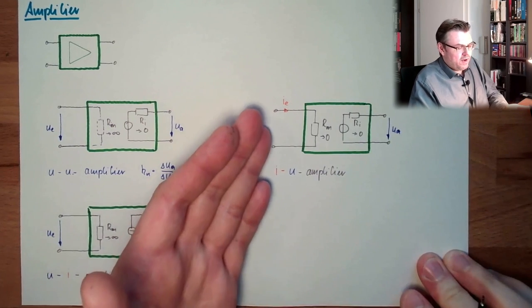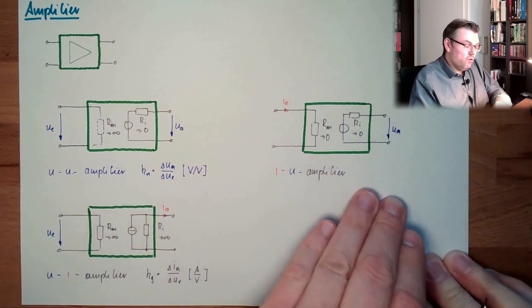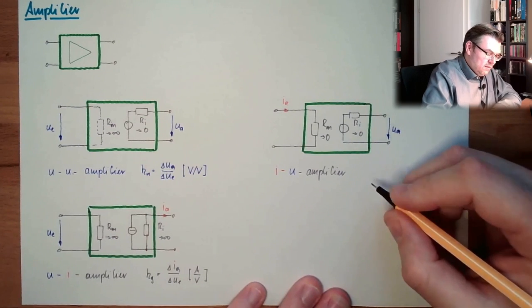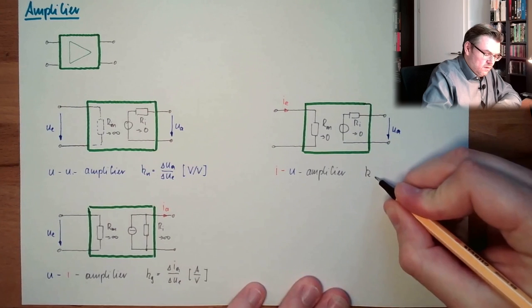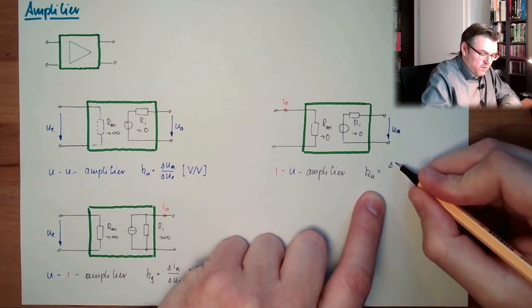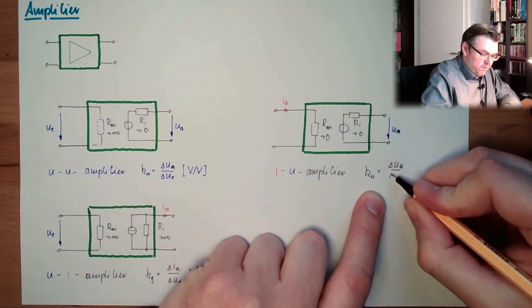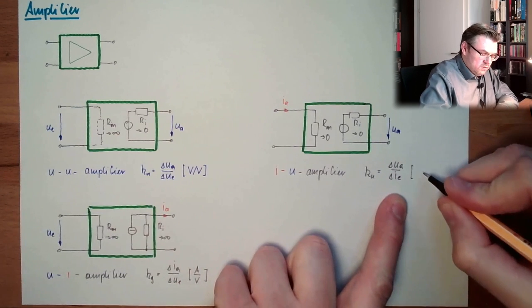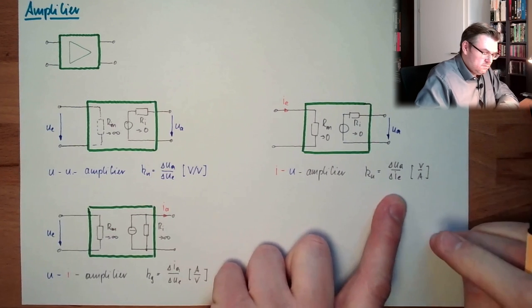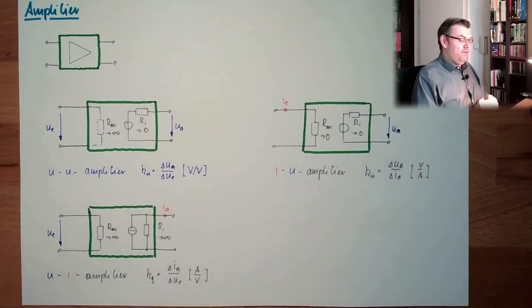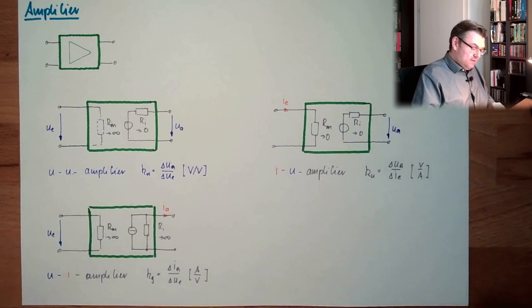I am converting a current signal to a voltage signal. And the gain factor is delta Ua divided by delta Ie. So, this is volts by amps. And now, it's really hard to guess, I think, the fourth variant.